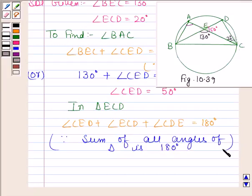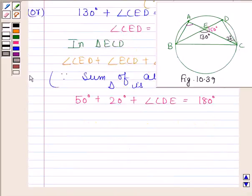Now substitute the value of angle CED and angle ECD in this equation. By substituting the values we get 50 degrees plus 20 degrees plus angle CDE is equal to 180 degrees. Now this implies angle CDE is equal to 110 degrees.